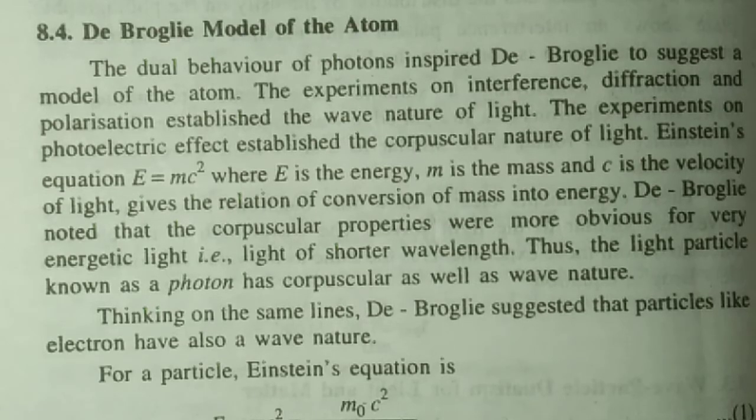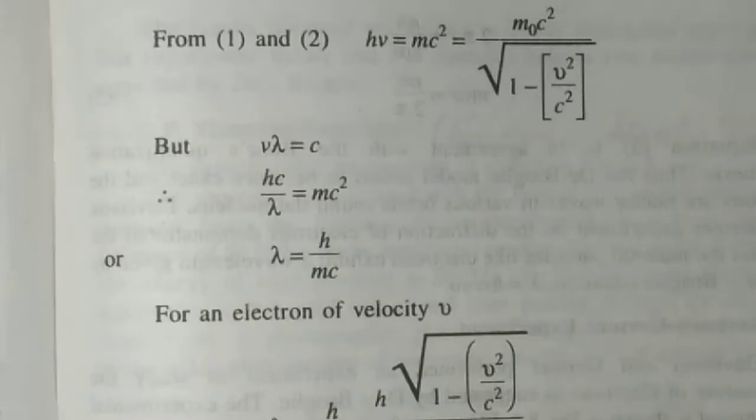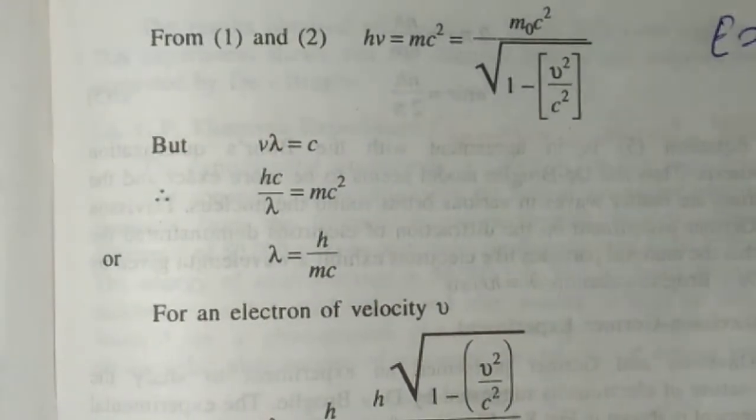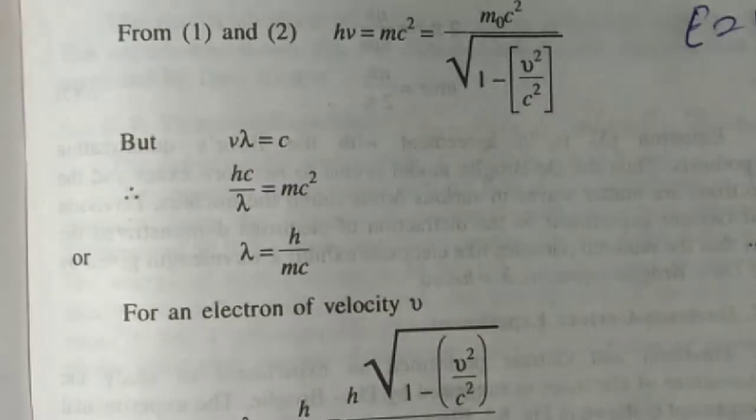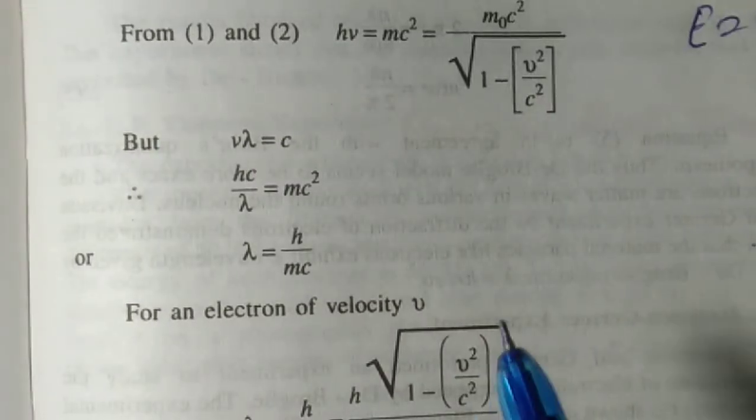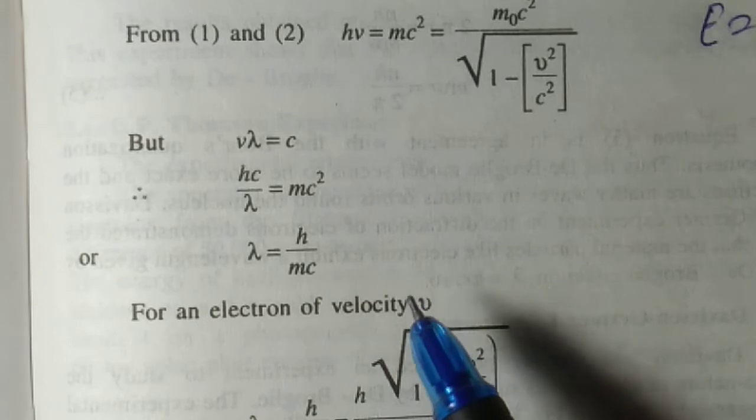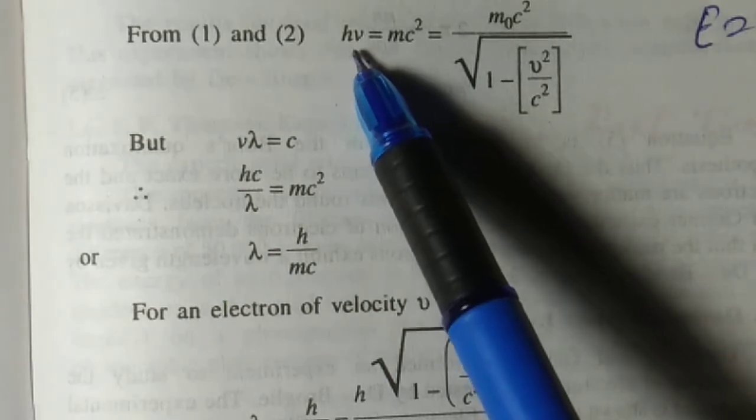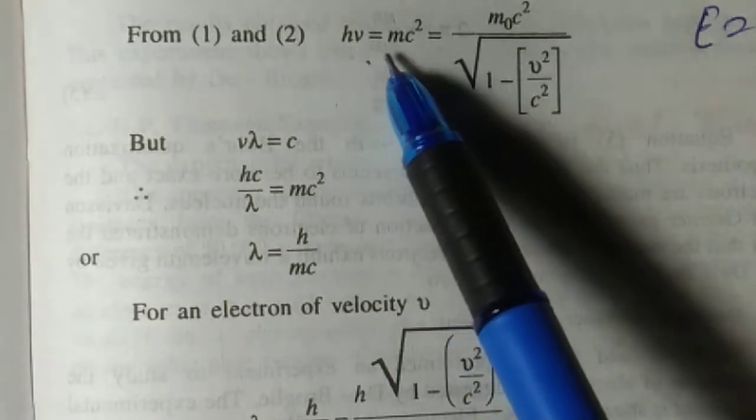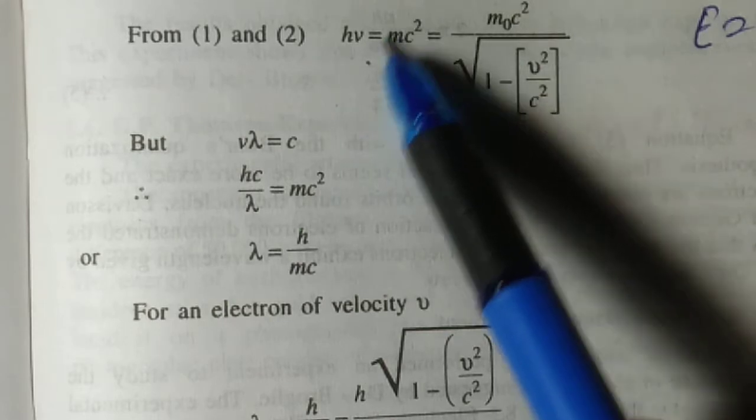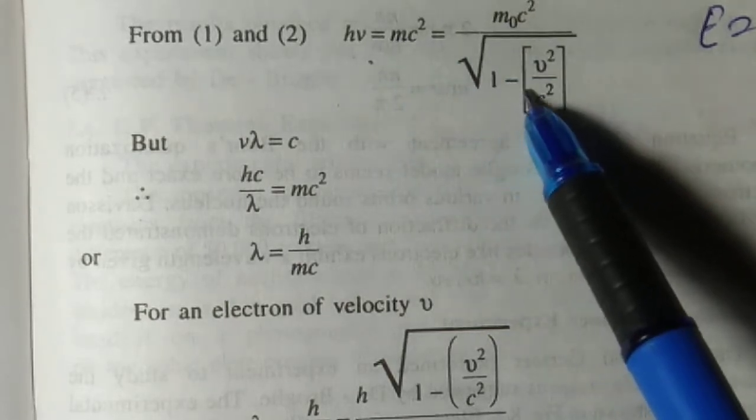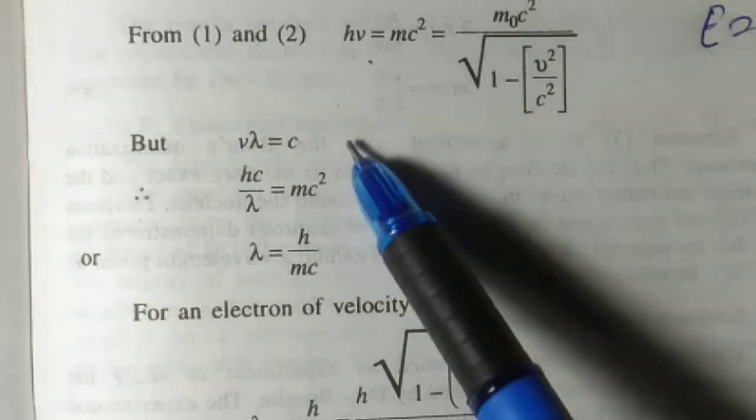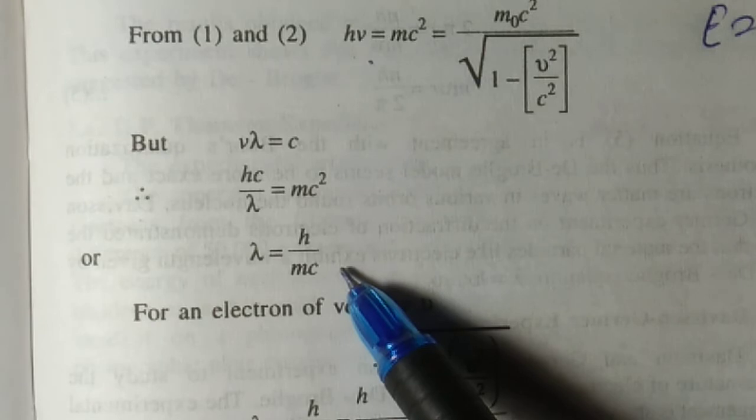For any photon, Einstein's equation is E = mc². Energy of any wave having frequency ν, according to Planck, is E = hν. We can equate hν = mc², where m is the moving mass m₀ upon square root of 1 minus v²/c². After simplifying, we get λ = h/mc.